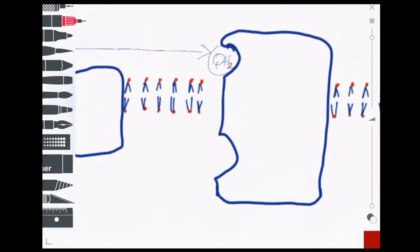In order to do this, a process has evolved to split these two electrons, known as the Q cycle. In Step 1 of the Q cycle, the two electrons brought to Complex III by ubiquinol are split into single electrons.